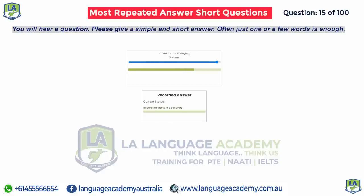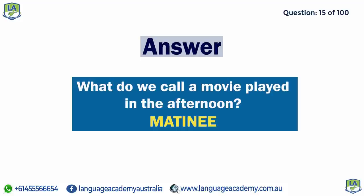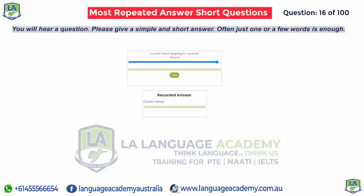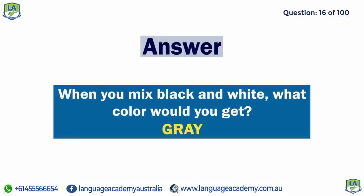What do we call a movie played in the afternoon? When you mix black and white, what color would you get? Gray.